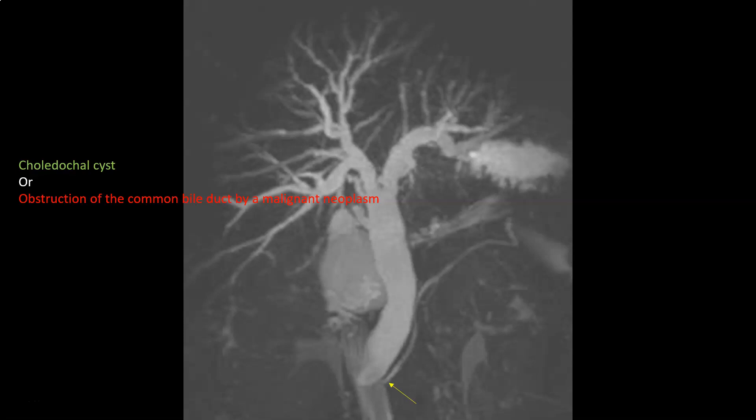The second scenario is that we are dealing with a choledochal cyst, so the situation now is that there is no obstruction and the dilatation of the common bile duct is due to the congenital weakness of its wall. And since the pancreatic duct does not have this congenital weakness, then it is well explained that it should not be dilated.